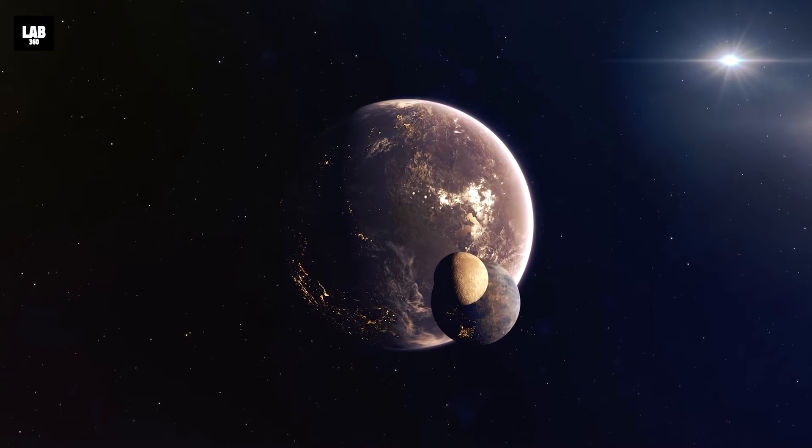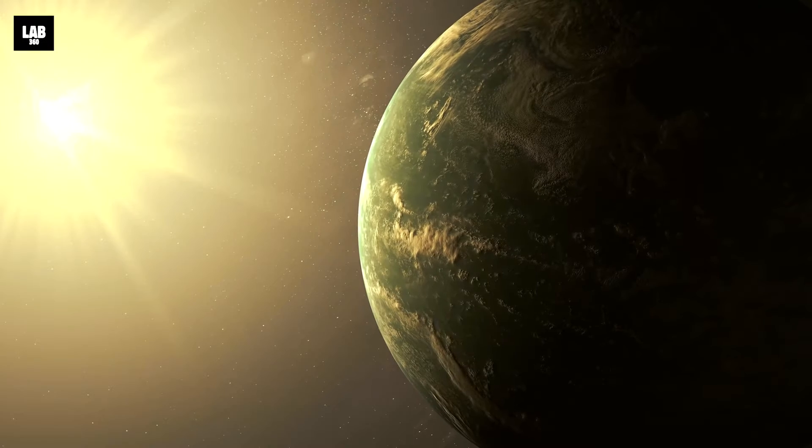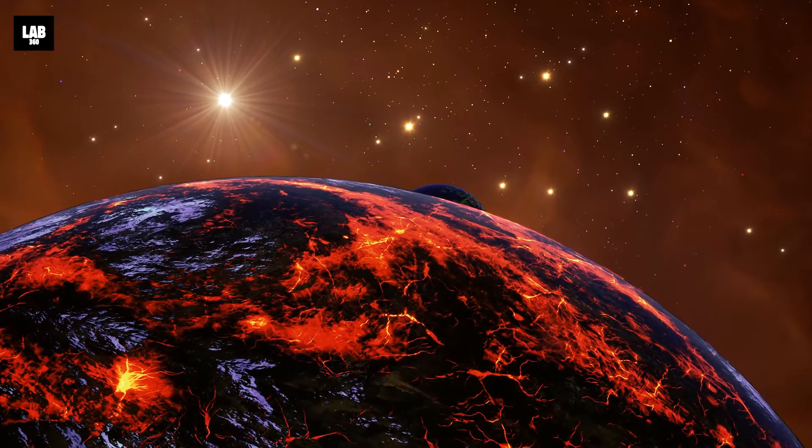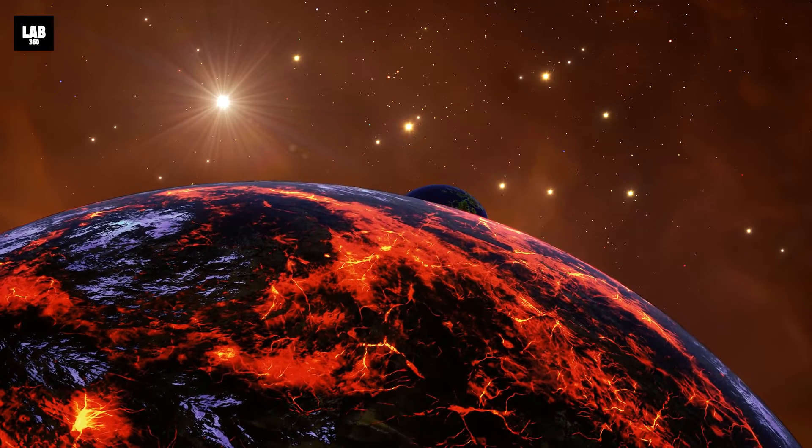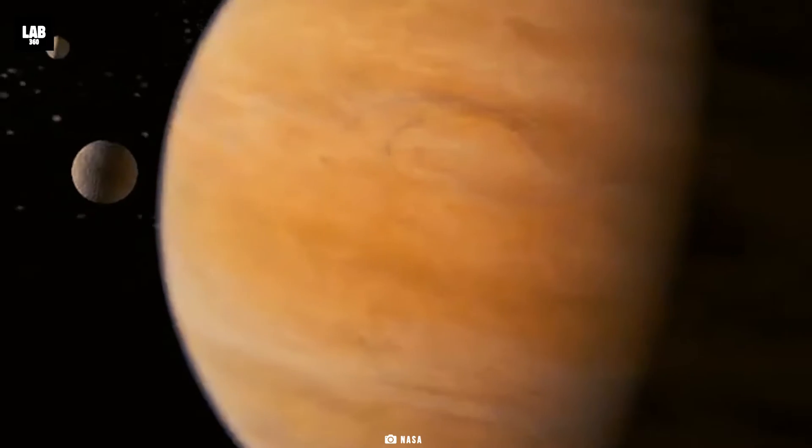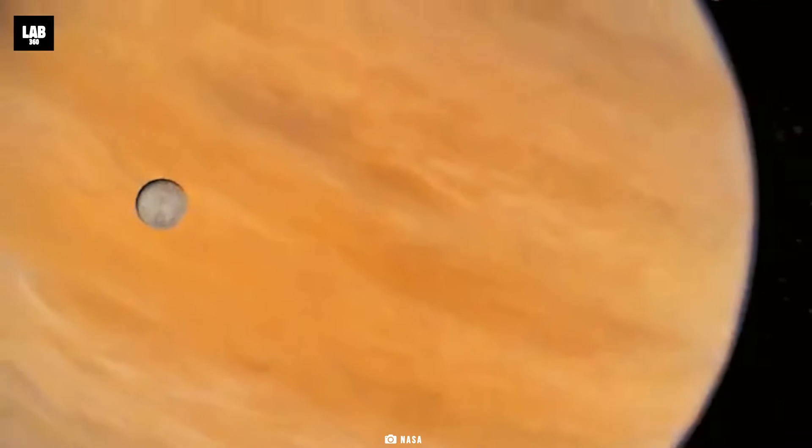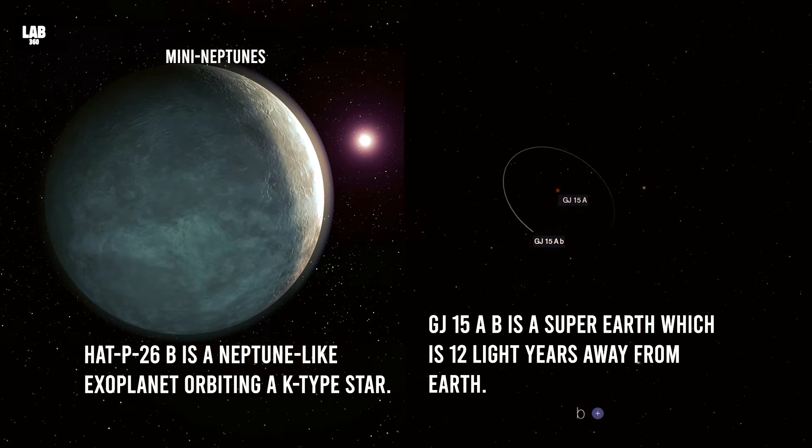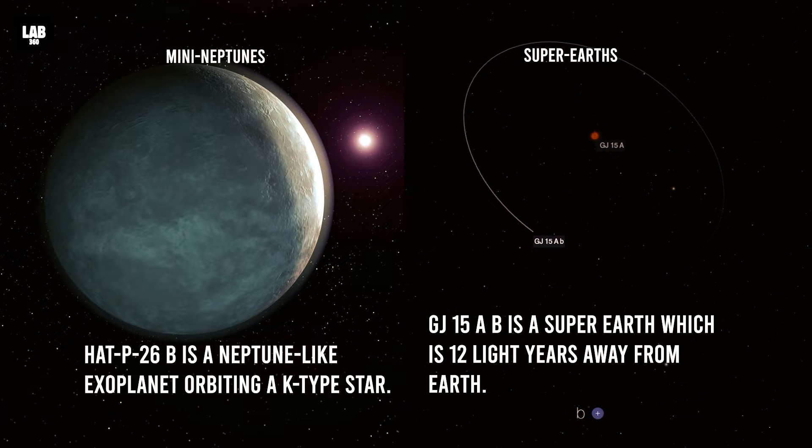These planets orbit a star just like how Earth orbits the Sun. From rocky planets to gas giants, the special thing about exoplanets is the fact that they are diverse in nature. There are Jupiter-like large gas giants called hot Jupiters that remain very close to their host star.